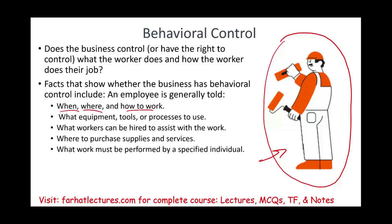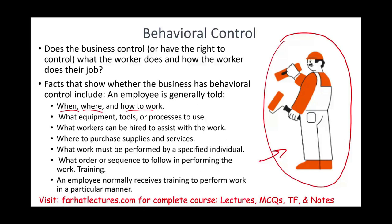If you're telling someone exactly what work must be performed and they cannot do something else, they're an employee. If they can do any work they would like, they're self-employed. The order or sequence of performing work and the type of training they receive are also factors. An employee normally receives training to perform work in a particular manner, while a self-employed individual gets their own training.